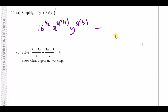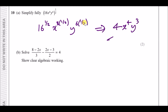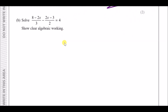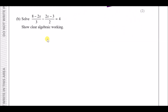Tidying up: 16 to the power of a half equals 4. For x, multiply the existing power by a half — 8 times a half is 4 — giving x⁴. For y, 6 times a half is 3, giving y³. So the simplified answer is 4x⁴y³.